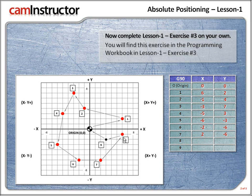On to position 8. The x is going to be a positive amount. How much? 1, 2, 3, 4, 5, 6 squares for the x. The y is going to be negative 1. So for position 8, x plus 6 and y negative 1. Now let's check out position 9. Position 9 in x is going to be positive: 1, 2, 3 squares. So the x is plus 3. We're below the x-axis: 1, 2. So the y is going to be a minus amount.